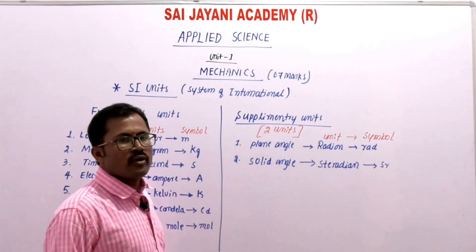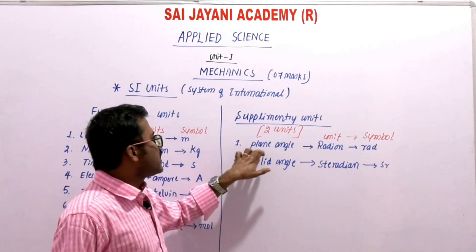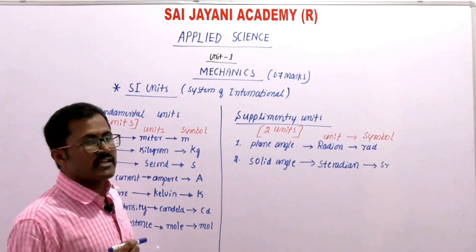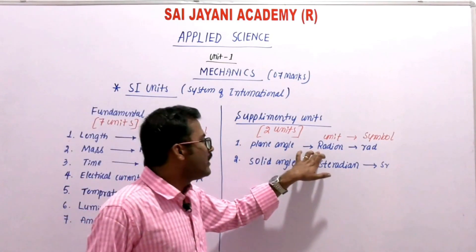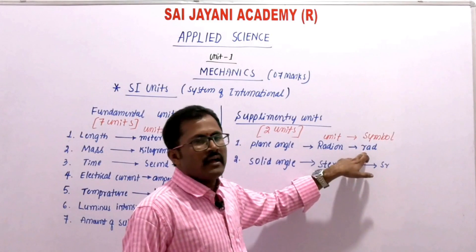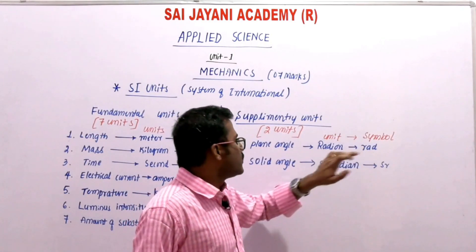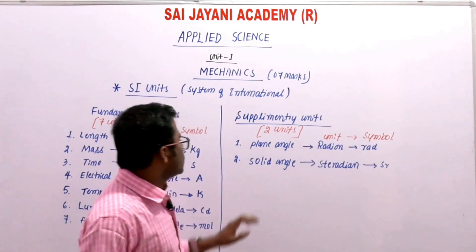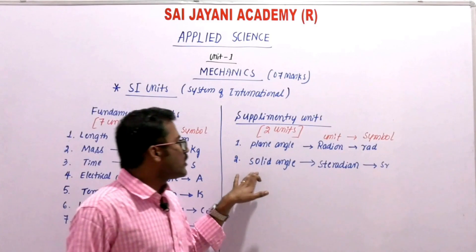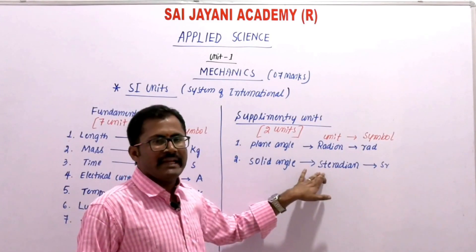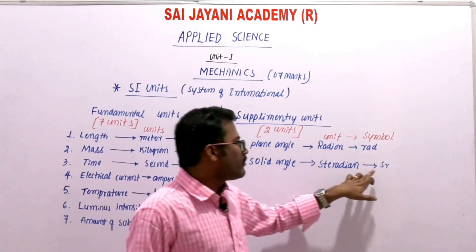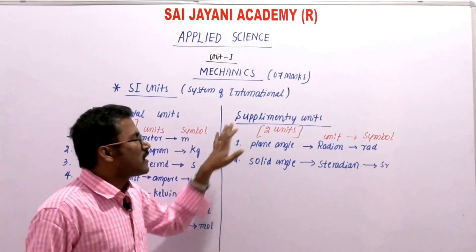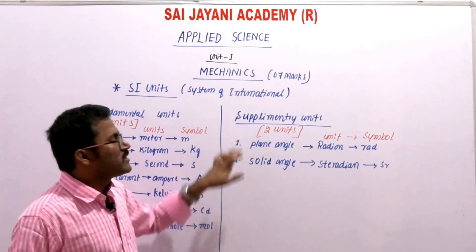There are also two supplementary units. The first supplementary unit is plane angle — the SI unit is radian, represented by the symbol 'rad'. The second supplementary unit is solid angle — the SI unit is steradian, represented by the symbol capital 'S' small 'r' (Sr). These are the two supplementary units in the SI system.